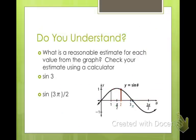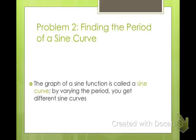Why don't you go ahead and try these two. See if you can come up with an approximation for these values. Sine of 3, sine of 3 pi over 2. Make sure when you check them that you have your calculator in radian mode. The graph of a sine function is called a sine curve. By varying the period, you get different sine curves. So if you vary the period, you either get a longer, more stretched out sine curve, or you get a shorter, tinier one.